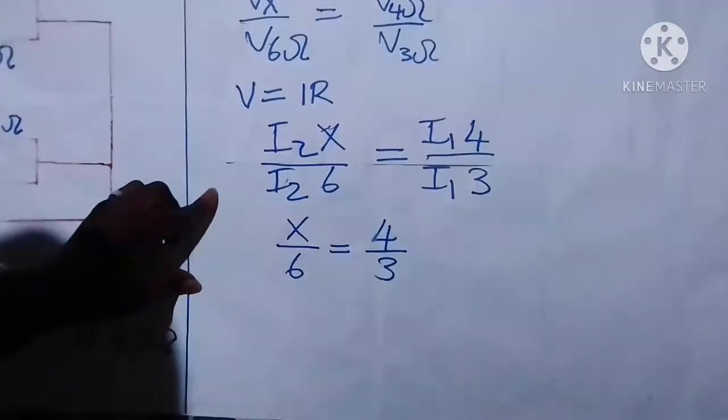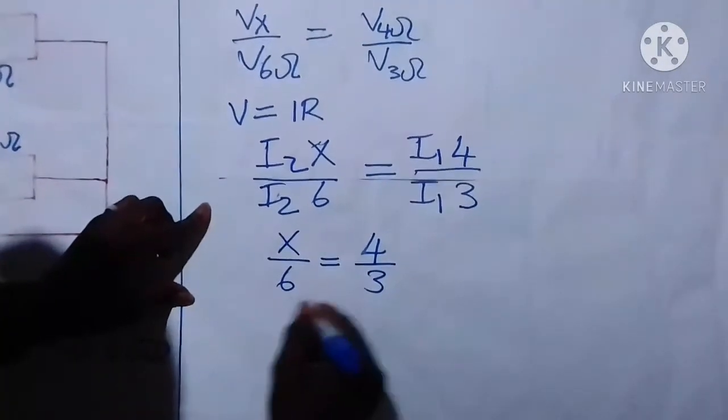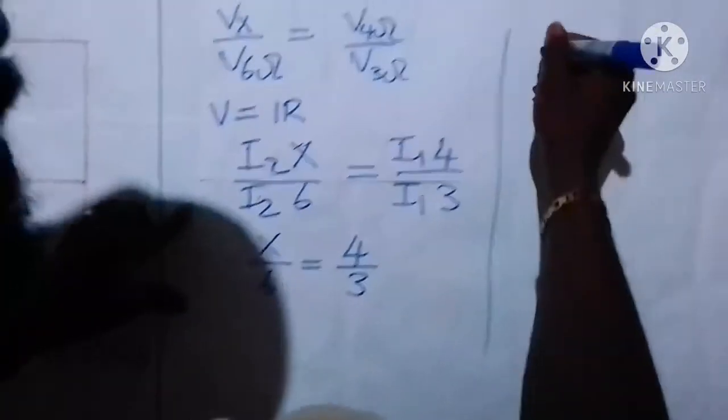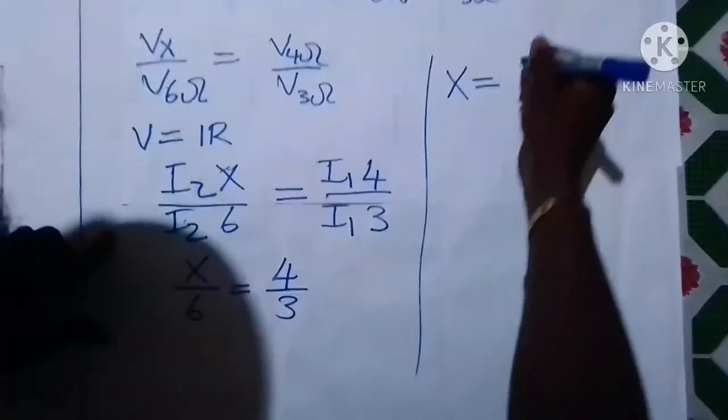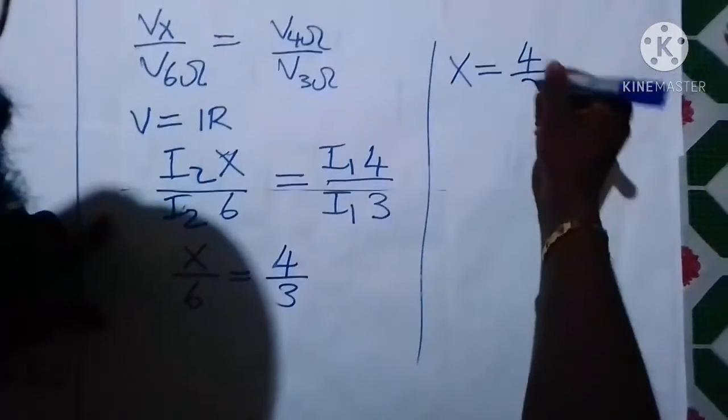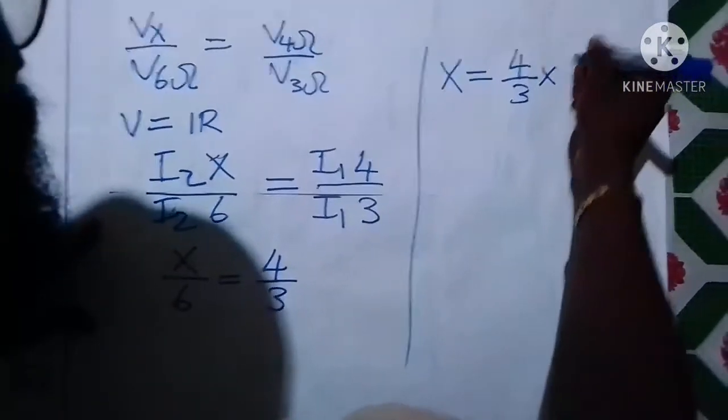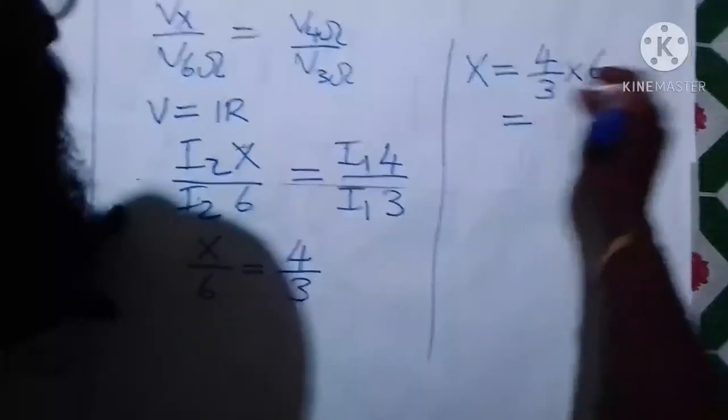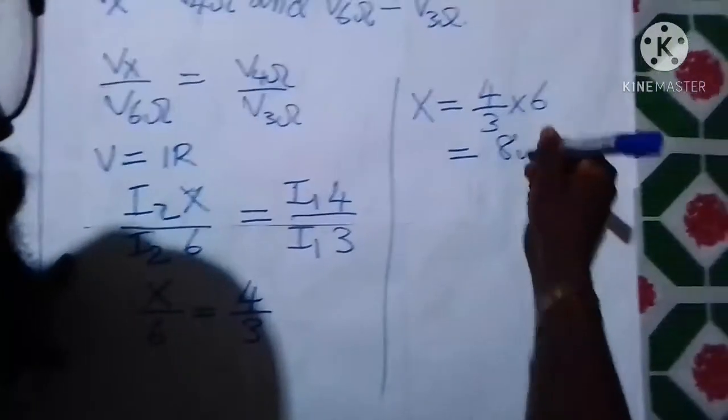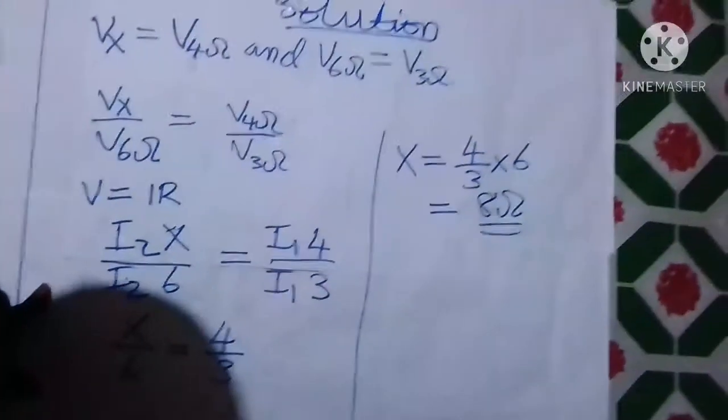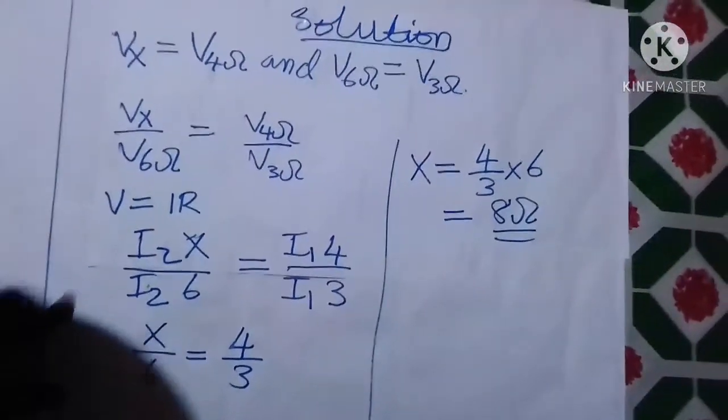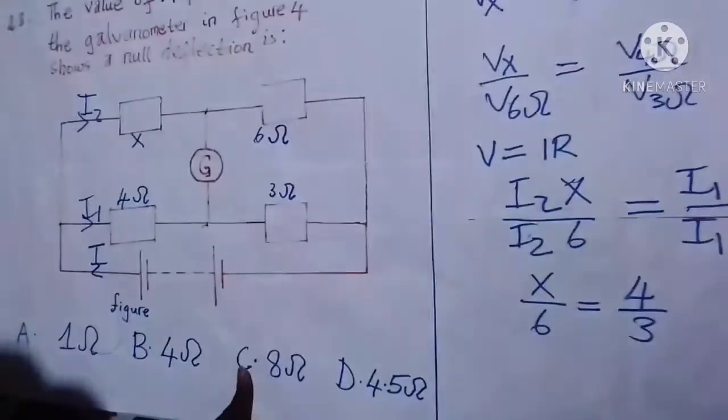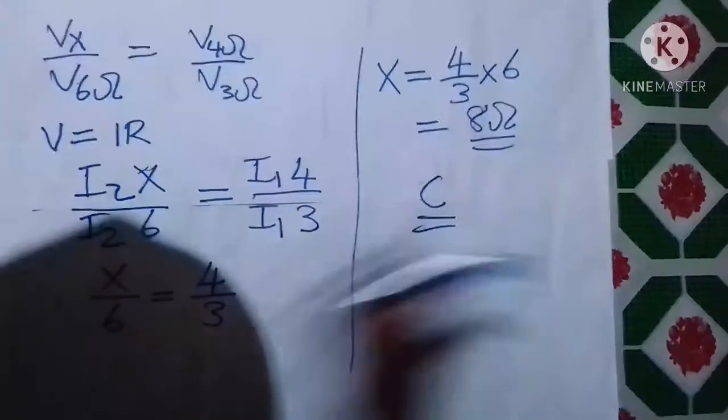You can solve for X, so X is equal to 4 over 3 times 6. If you simplify this, you are going to have 8 ohms. So that is our answer and it corresponds to C. So C is our correct choice.